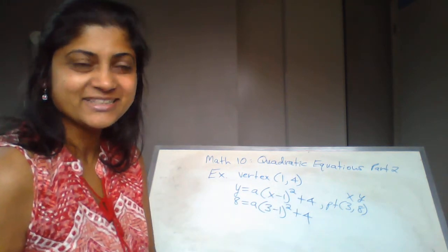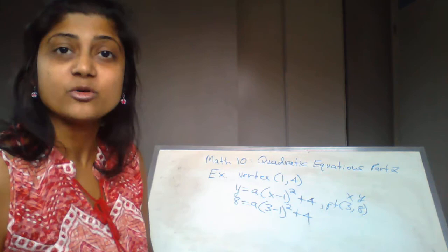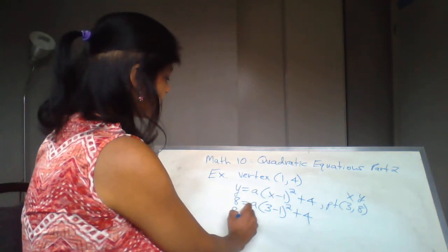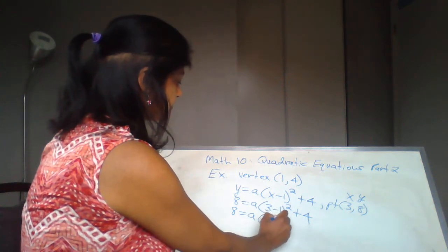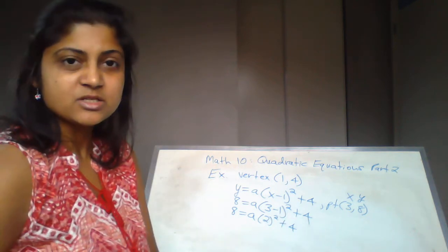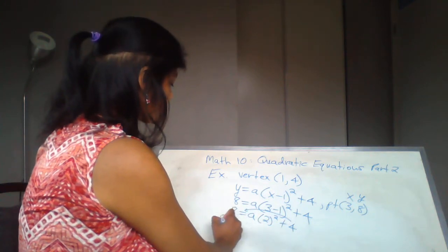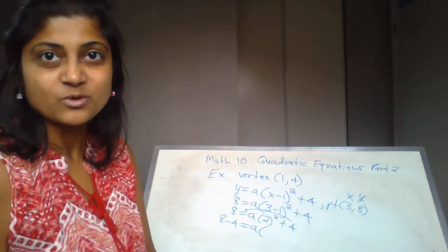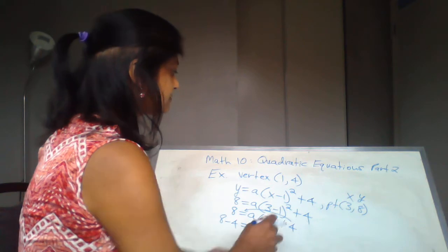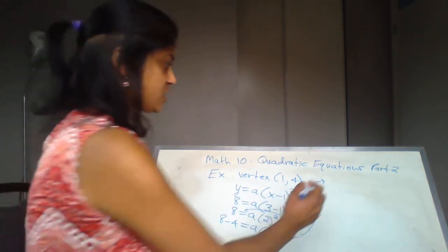I'm solving for the a value — trying to see if this is going to be a vertical stretch or a vertical compression. So 8 = a(2)² + 4. I'm going to take the 4 to the other side: 8 minus 4 equals a times 4, since 2 squared is 4. So 8 minus 4 equals 4a.